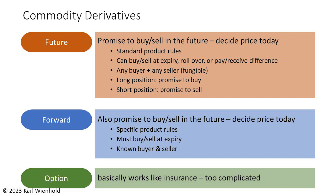This is especially important for speculators who want to participate in the risk and opportunity in this market but are not interested in having or selling green coffee. A forward contract is similar to a futures contract but with a few differences — it's also a promise to buy or sell at some point in the future, but it's often much more flexible and can be arranged between two parties without going through the exchange. The specific product rules are determined by the buyer and the seller, and the purchase or sale normally has to occur at the expiry. Anytime a roaster purchases from an importer for delivery at some point in the future, this is forward booking and technically could be considered a financial derivative.